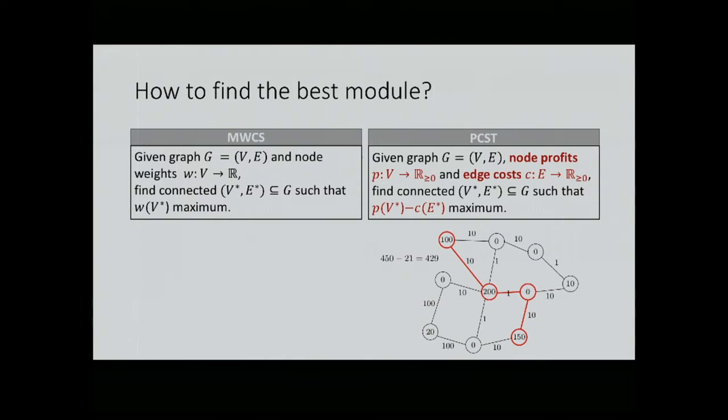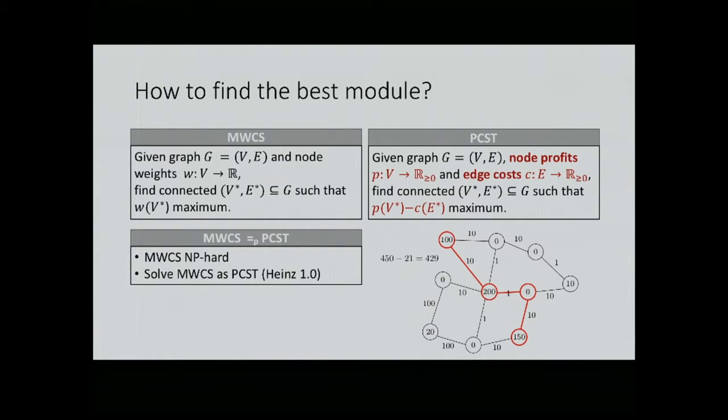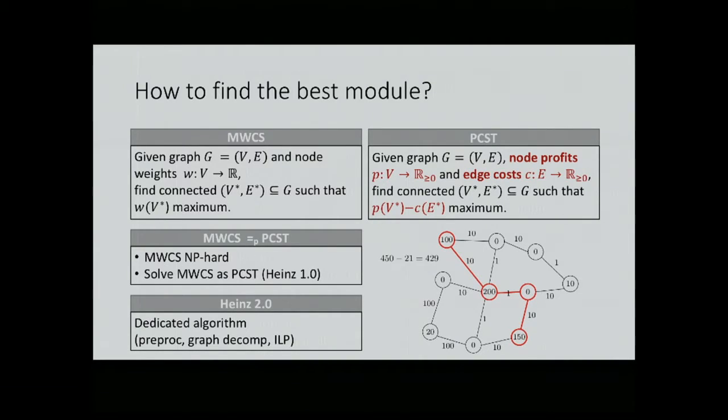Find a subset of nodes that induces a connected subgraph such that the score is maximum. There's a very similar problem which has been studied intensively: the prize-collecting Steiner tree problem. Given a graph, now we have node profits and edge costs. The task is to find this connected subgraph, but now the score is the sum of the node profits minus the sum of the edge costs. It's easy to see that these problems are basically the same. If you can do one, you can do the other - they are equivalent. You inherit, of course, also the bad things. This problem is hard, also hard to approximate. But you can use algorithms for prize-collecting Steiner tree to solve this model.